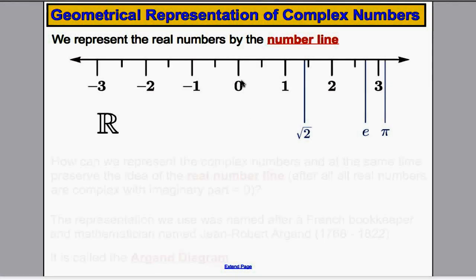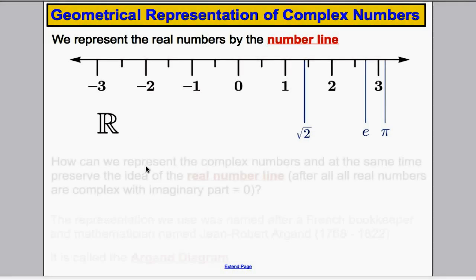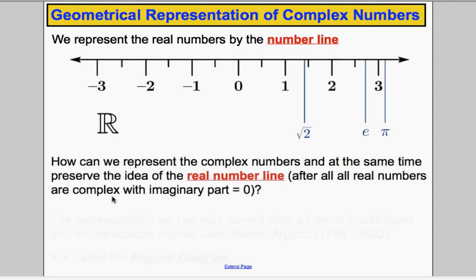We are going to need a geometrical representation of complex numbers. How do we represent the real numbers? We represent the real numbers by the number line — zero tends to be in the middle, positive numbers to the right-hand side, negative numbers to the left-hand side. However, how can we represent the complex numbers now? We know the complex numbers are a bigger set of numbers, and the real numbers are within them. How can we represent the complex numbers and preserve the idea of the real number line?